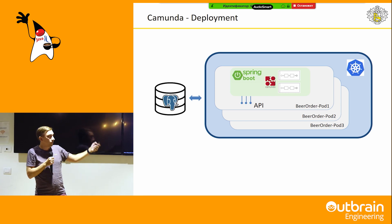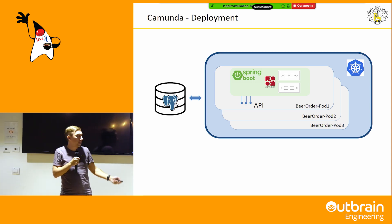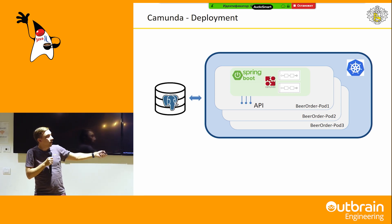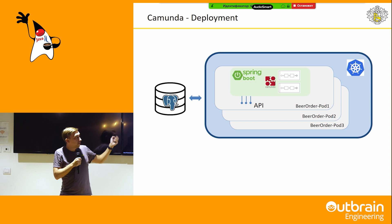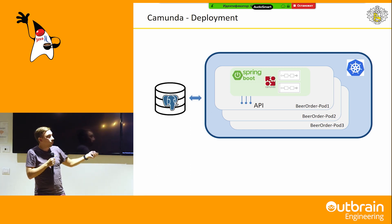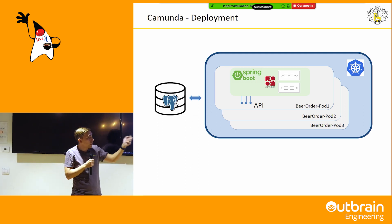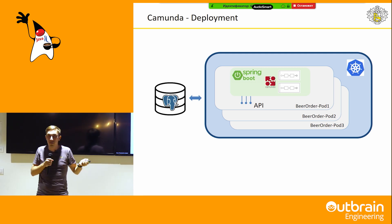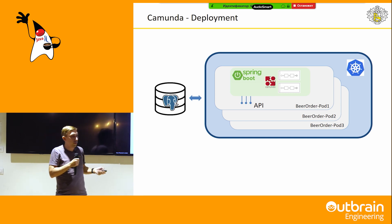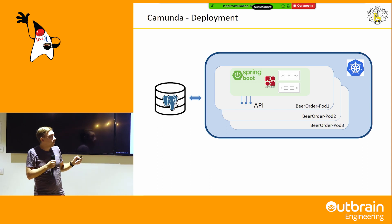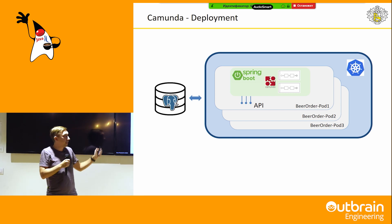Now we can build our application and deploy it into Kubernetes, for example. We have several pods of our application — each pod has Camunda as a dependency, and all these services share a common database. So we have isolated microservices. We can test them like a common Spring Boot application, monitor them, add metrics, and so on — but with a workflow engine inside.